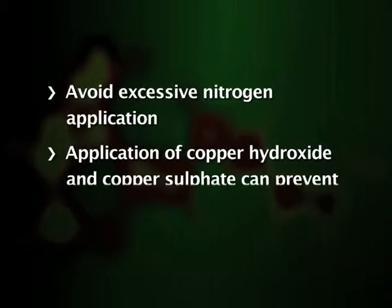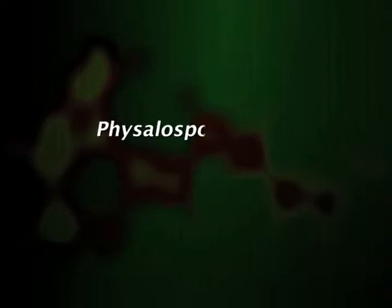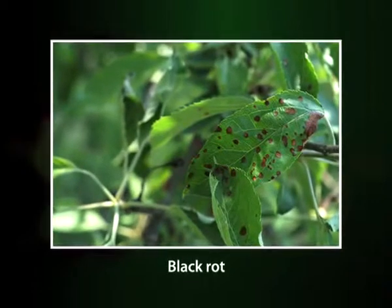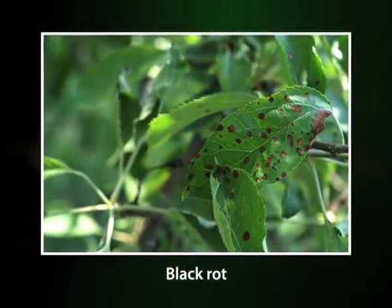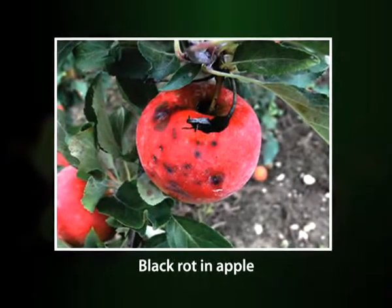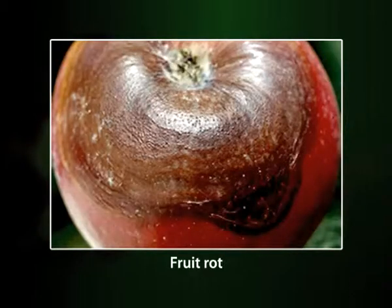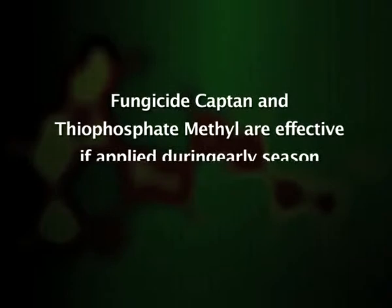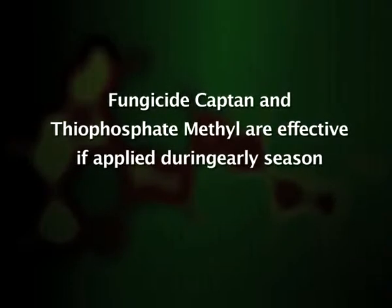Application of copper hydroxide and copper sulfate can also prevent fire blight. Black rot is caused by the fungus Physalospora obtusa. The disease begins on the leaf as a purple speck that enlarges into a brown or chocolate-centered lesion; heavily infected leaves drop from the tree, weakening it and reducing flowering in the next year. Infected fruit begins with tiny red or purple spots which after a few weeks enlarge, resulting in alternate zones of black and brown. The rot eventually affects the entire fruit, which wrinkles, mummifies, and often remains attached to the tree. The disease is controlled by removing and discarding dead branches and infected fruit; fungicides captan and thiophanate-methyl are effective if applied during early season.